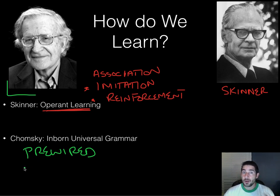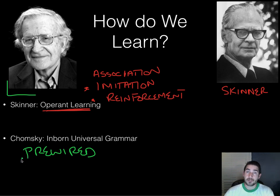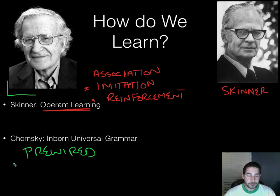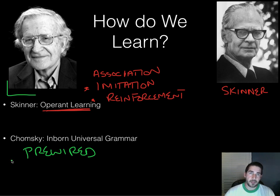Chomsky says that if given the opportunity and a nurturing environment, children are pre-wired to develop language — like a flower that just needs water and sunshine to grow. He also notes that all languages share the same universal building blocks: nouns, verbs, and so on, and they all develop in the same manner.